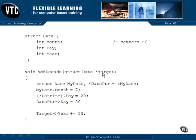Remember how to read that? You start at the word 'target,' come over to the right — there's nothing there — so we come back around. This is going to be a pointer to a date structure. You go counterclockwise, the way we looked at in an earlier video. So 'target' has to be a pointer to a date structure, and that's what gets passed into addDecade.